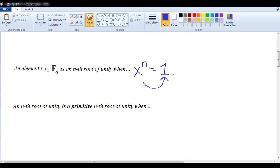And an nth root of unity is a primitive nth root of unity when the order of X is equal to n. In other words, when n is indeed the smallest positive integer to which we can raise X and still get this 1.